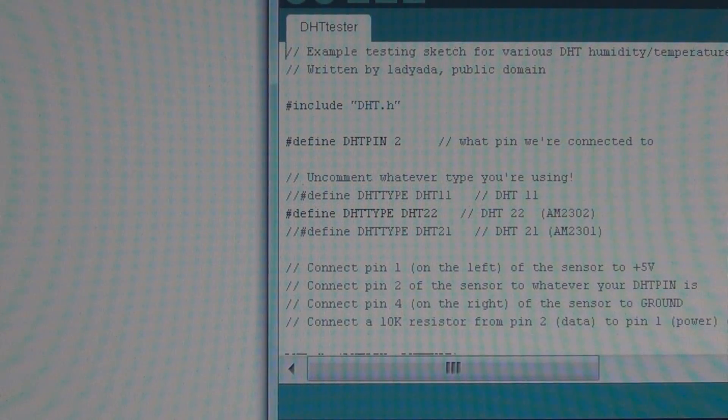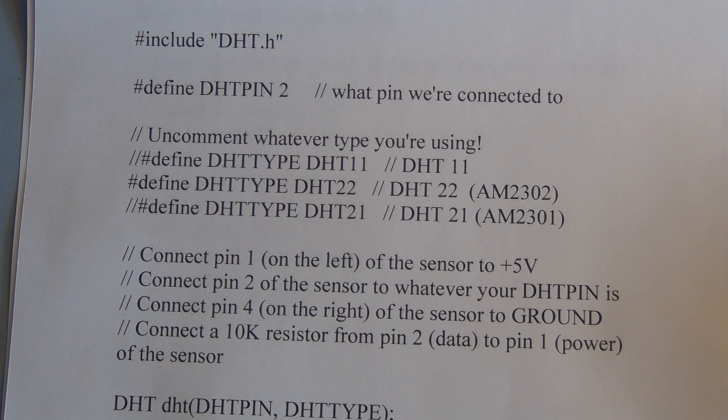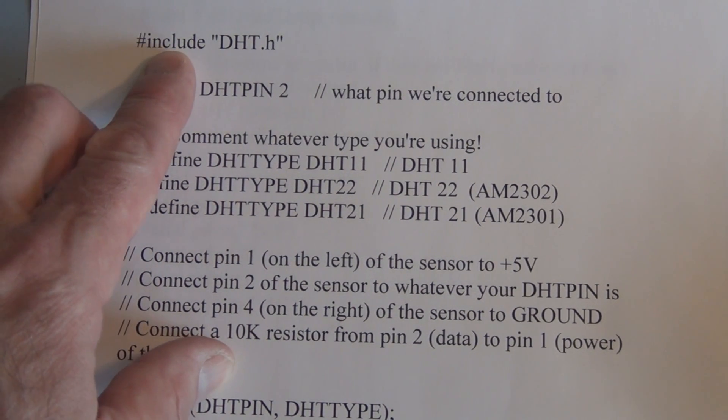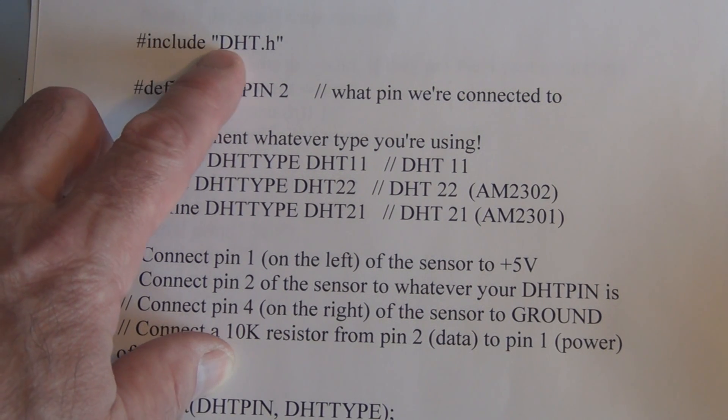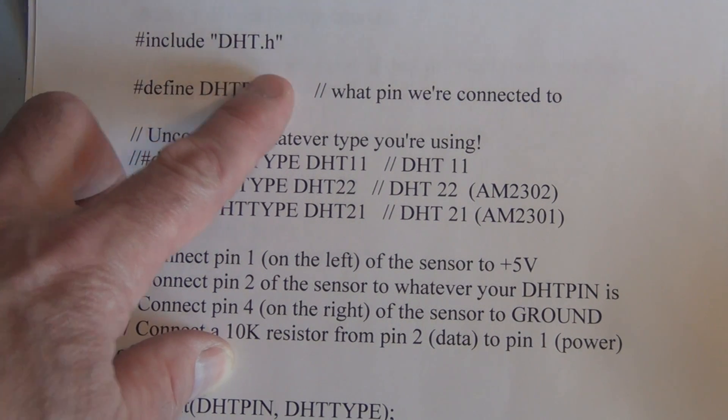And it has an example program for reading the humidity and temperature with the serial monitor program. So like the sketch with the servo and the LCD, we have to import the library. So here we have the include DHT dot H, which is importing the sensor library.